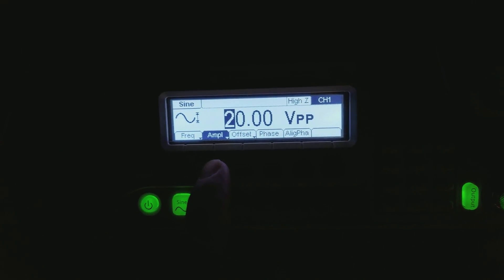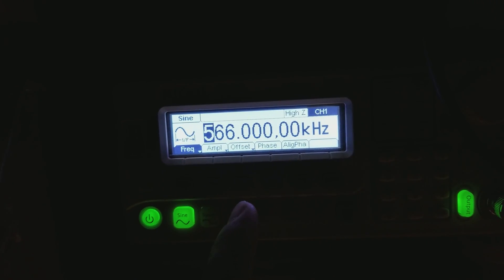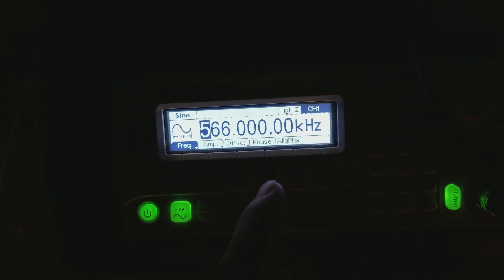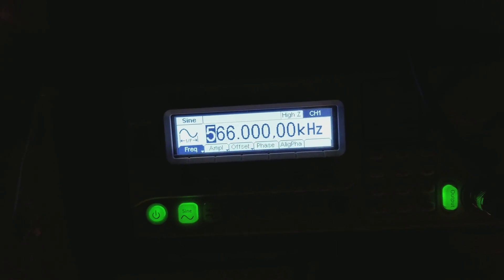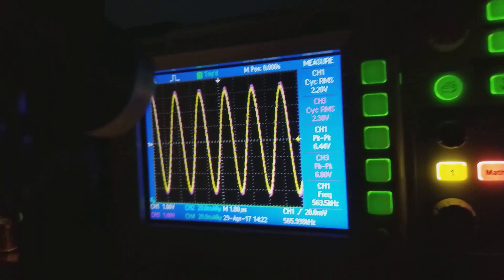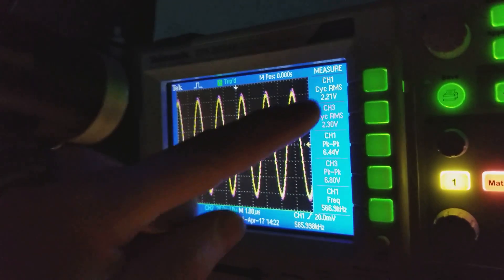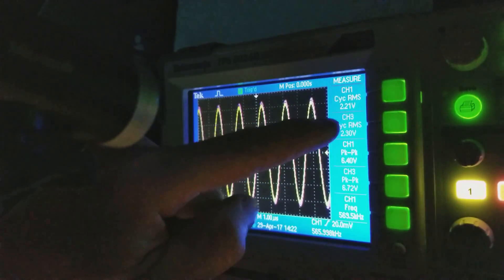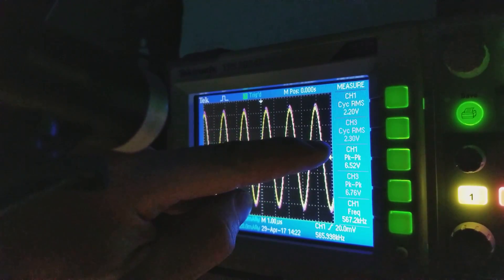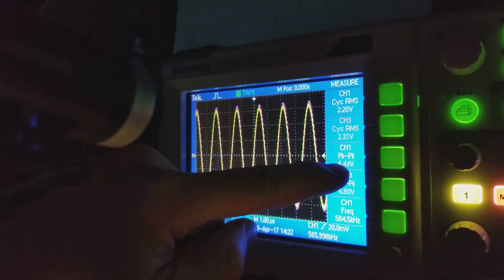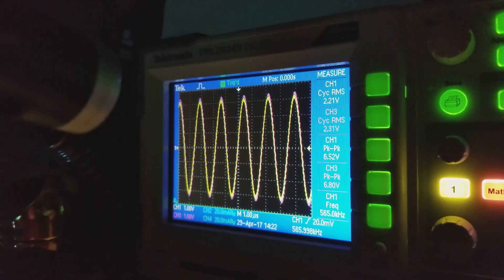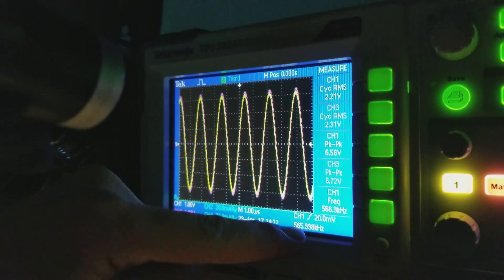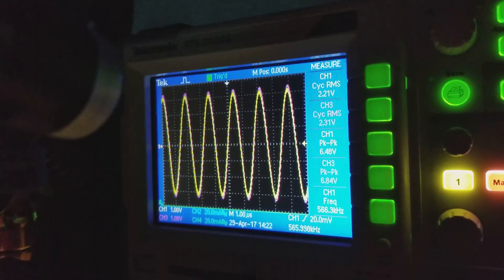It is set to 20 volts peak to peak. Currently frequency is here, zero phase shift, zero offset. So the oscilloscope - I'll show you what you're looking at. You're looking at channel 1 is the input, channel 3 is the center resistor, and then channel 1 peak to peak, channel 3, and then I've got the frequency here.